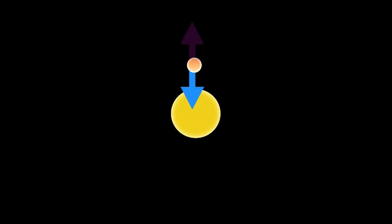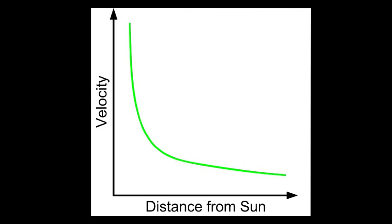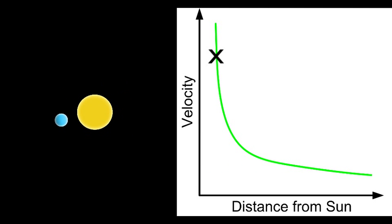Basically, for a planet orbiting closely to the Sun, there will be a very strong gravitational pull, and hence, for the object to stay in orbit, also a very high centripetal force — which in turn means the planet must move at a relatively high orbital velocity. On the other hand, a planet orbiting at a greater distance from the Sun would feel a much weaker gravitational force providing the centripetal force to keep it in orbit, and would thus have to move at a much lower velocity.